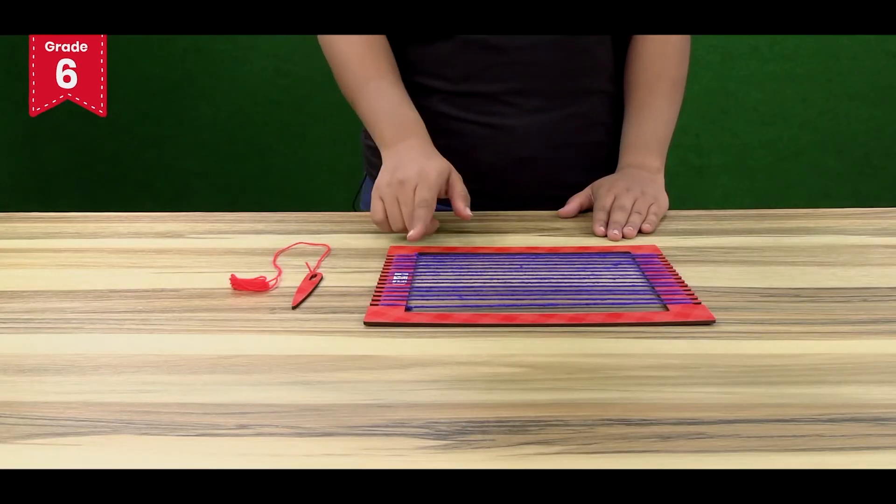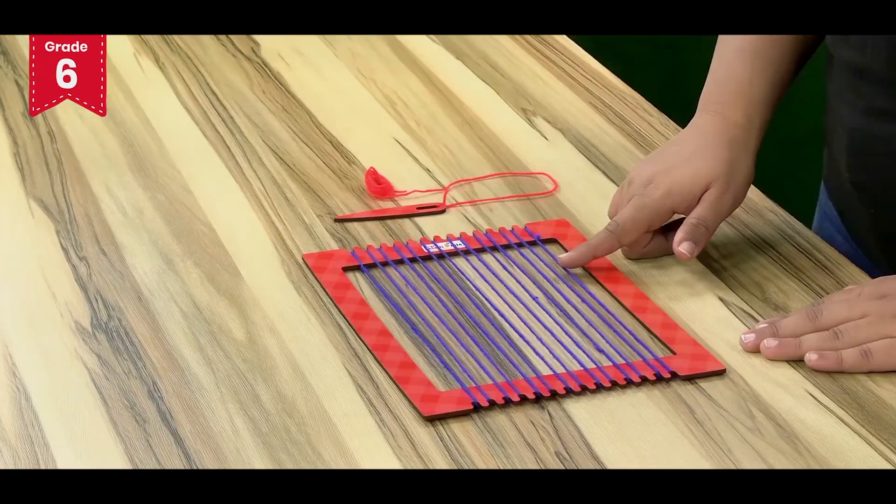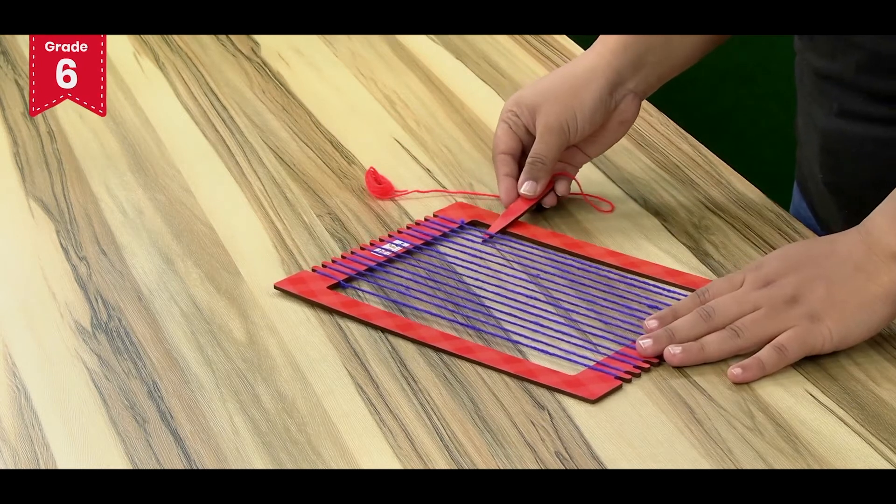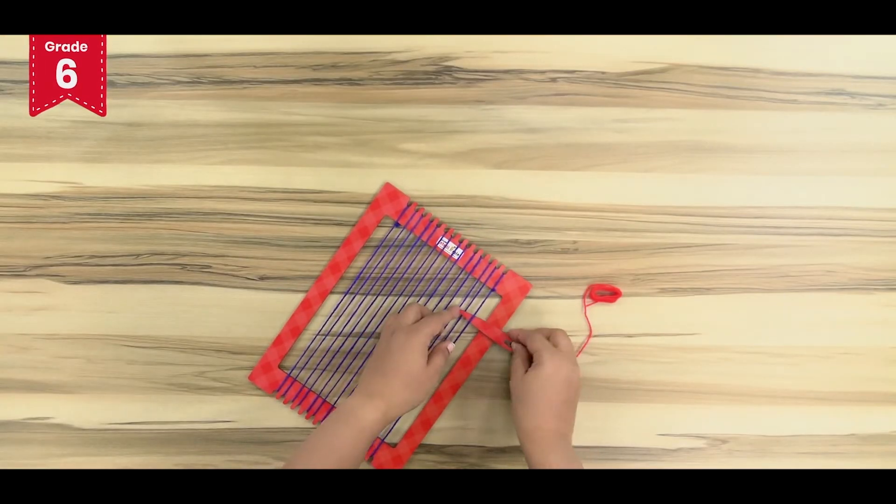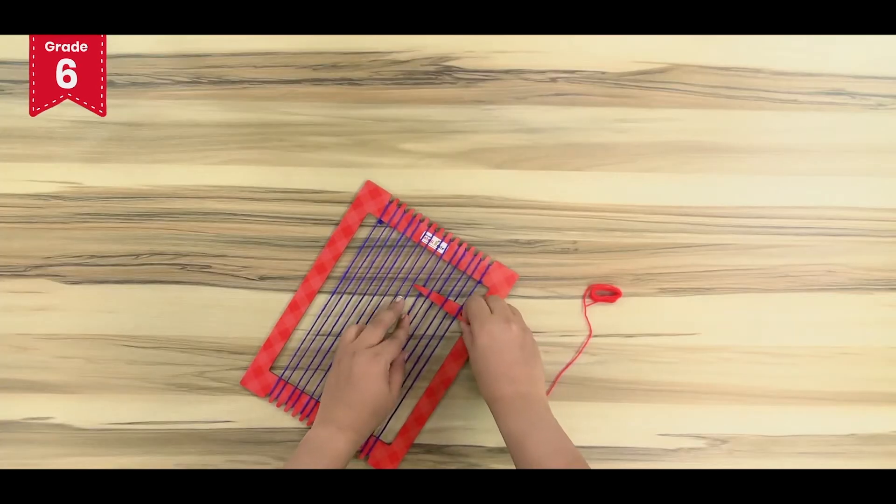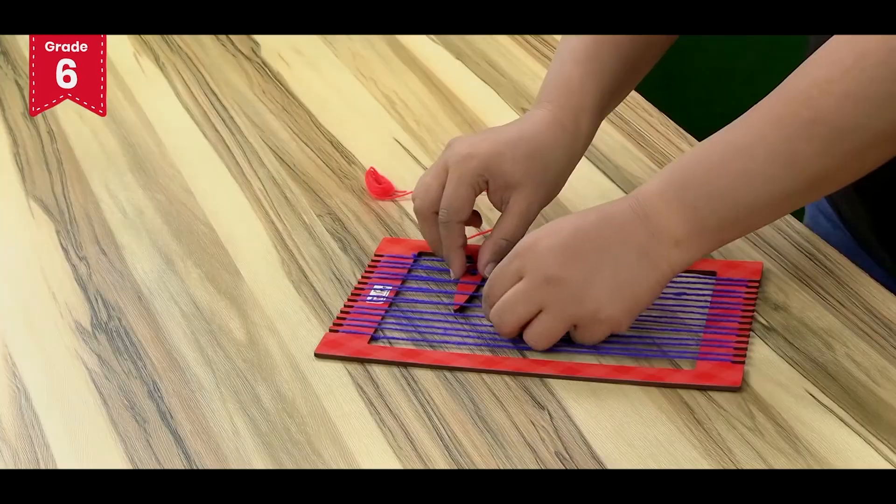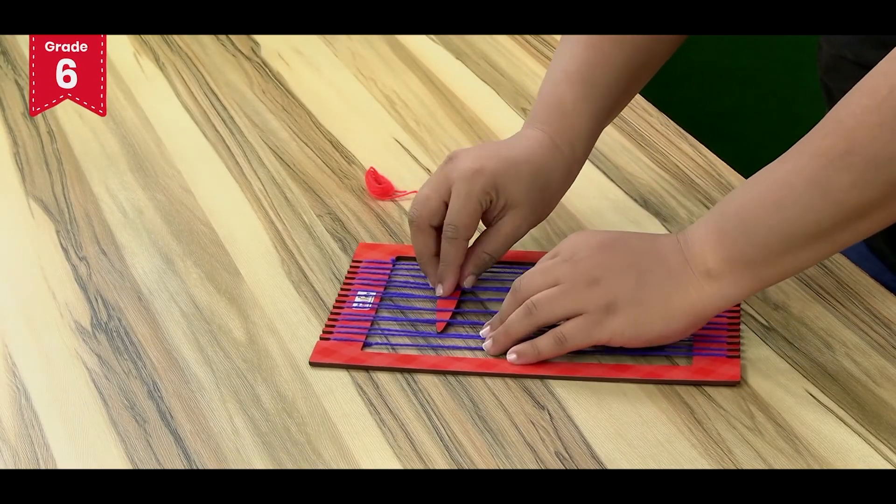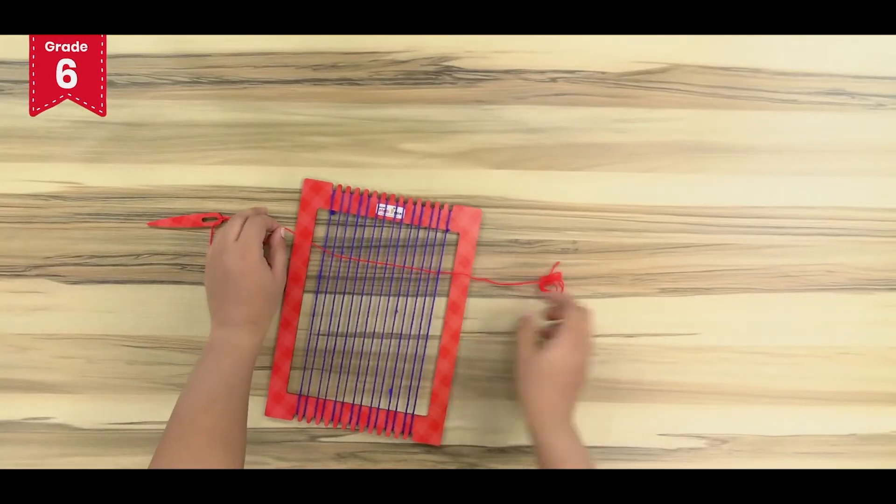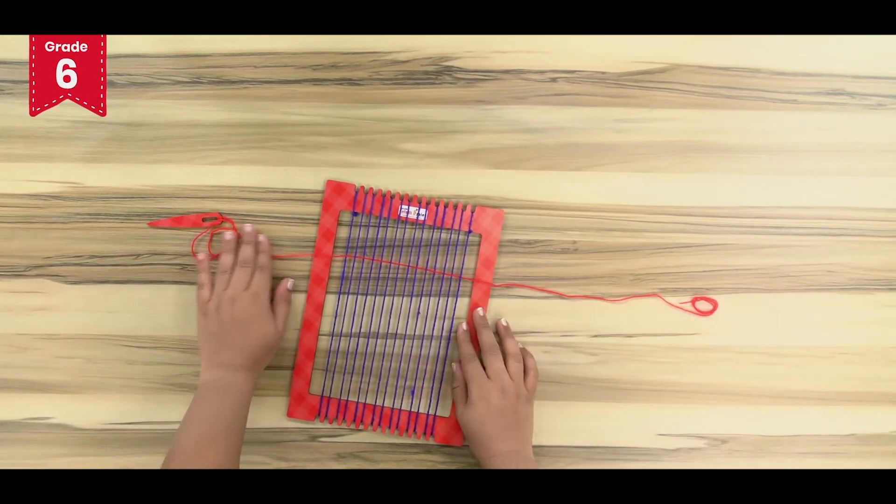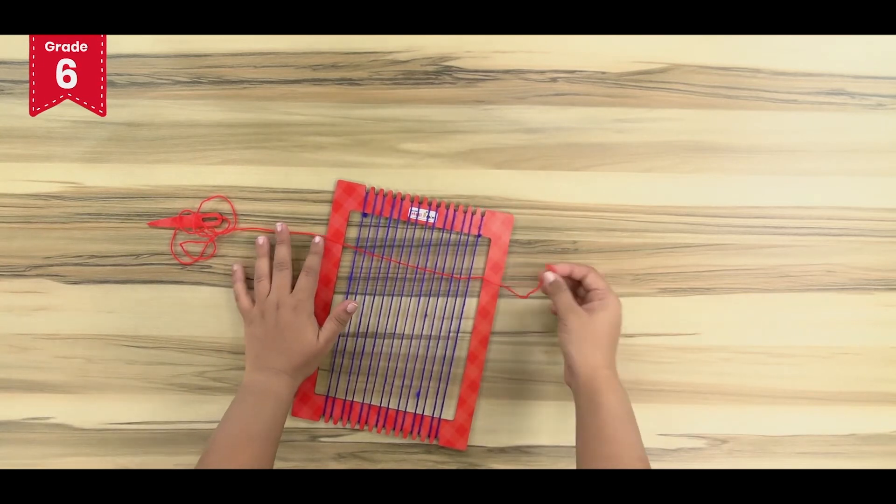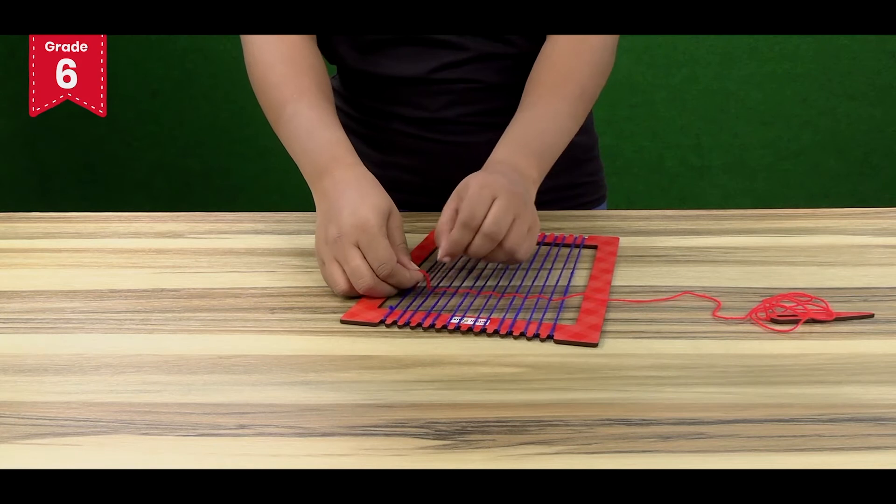Now leave around 1.5 inches from the side and start making a crisscross pattern like this. You have to move the needle in a crisscross pattern. At the other end of the red thread, tie a knot on the blue thread like this.